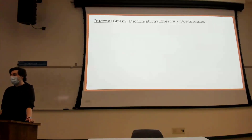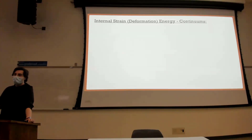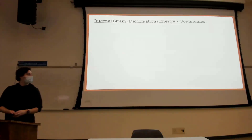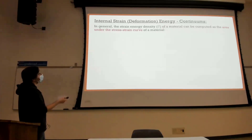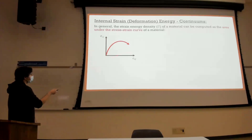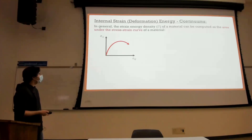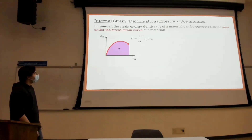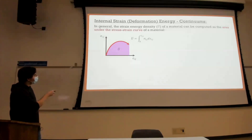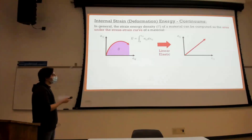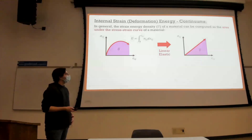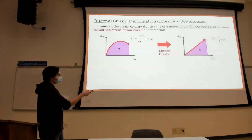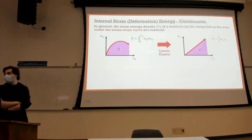The strain energy density of a material, U-bar, is the area under the stress-strain curve. If we take a uniaxial test, the strain energy density is the area under this curve, found as the derivative of σ_ij with respect to ε_ij. For a non-linear material this is the general formula. We're dealing with linear elastic materials, so the area under the curve is simply one-half of σ_ij times ε_ij.